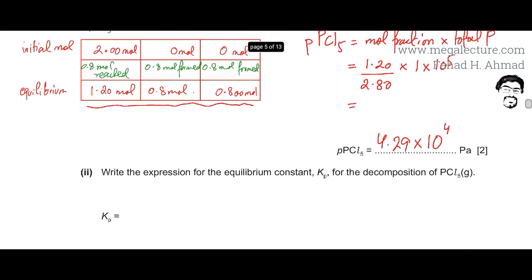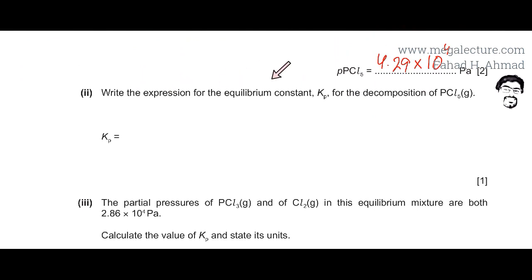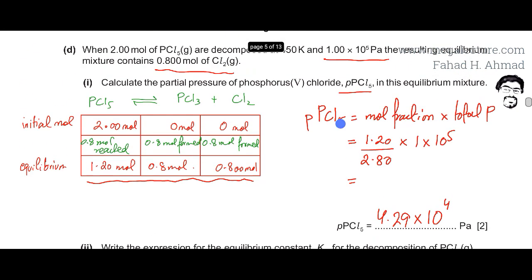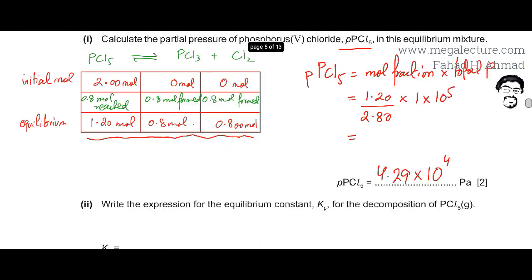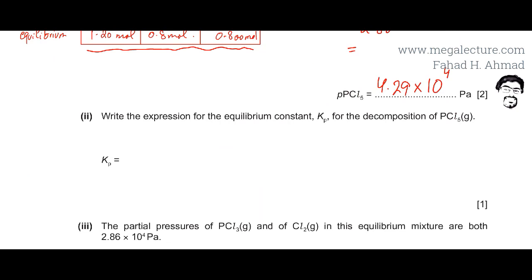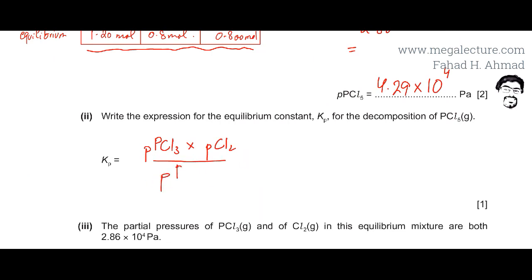Write the expression for the equilibrium constant Kp for the decomposition of PCl5. Looking at the equation, Kp equals the partial pressures of the products divided by the partial pressure of the reactant. So Kp equals the partial pressure of PCl3 multiplied by the partial pressure of Cl2, all divided by the partial pressure of PCl5.